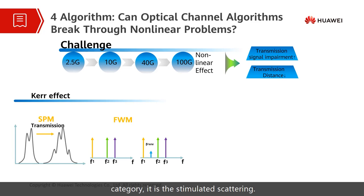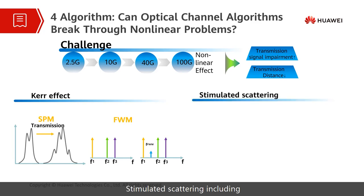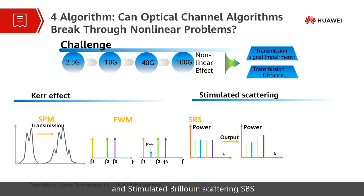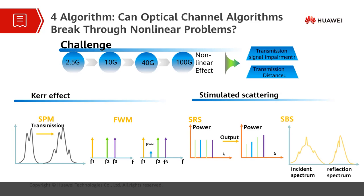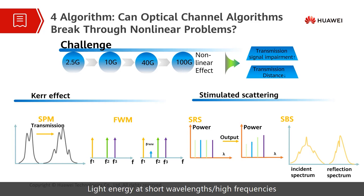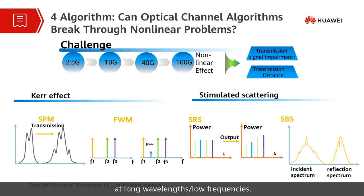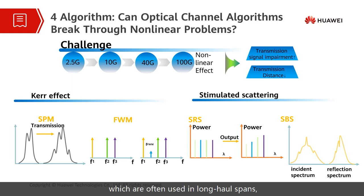The second category is stimulated scattering, including stimulated Raman scattering (SRS) and stimulated Brillouin scattering (SBS). In stimulated Raman scattering, incident light interacts with atoms in the transmission medium to generate low-frequency photons; light energy at short wavelengths and high frequencies is transferred to light at long wavelengths and low frequencies. Raman amplifiers, often used in long-haul spans, take advantage of this non-linear effect.